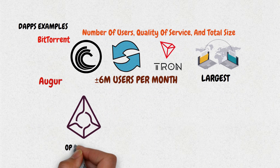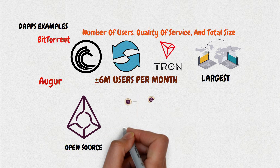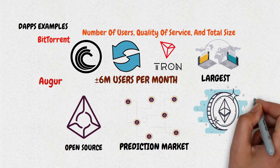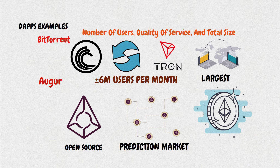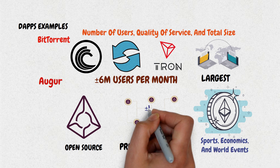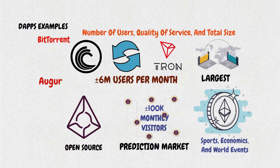Augur: Augur is an open-source decentralized prediction market platform built on the Ethereum blockchain. Augur allows users to create prediction markets on different topics, including sports, economics, and world events. Augur's website is visited by approximately 100,000 monthly visitors.